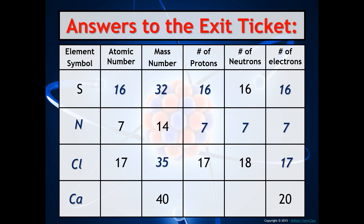Last but not least, calcium. The electrons are 20, which tells us the atomic number must be 20 and the number of protons must be 20 — and that corresponds to calcium. To find the number of neutrons, take the mass number minus the number of protons.